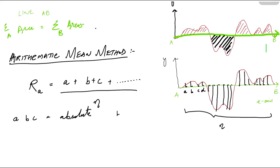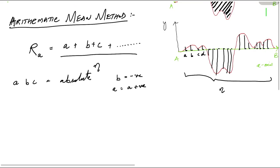If a point is in the negative direction, the value will be negative; if a point is in the positive direction, the value will be positive. This is the arithmetic mean value method based on the vertical readings A, B, C, D that we have taken.